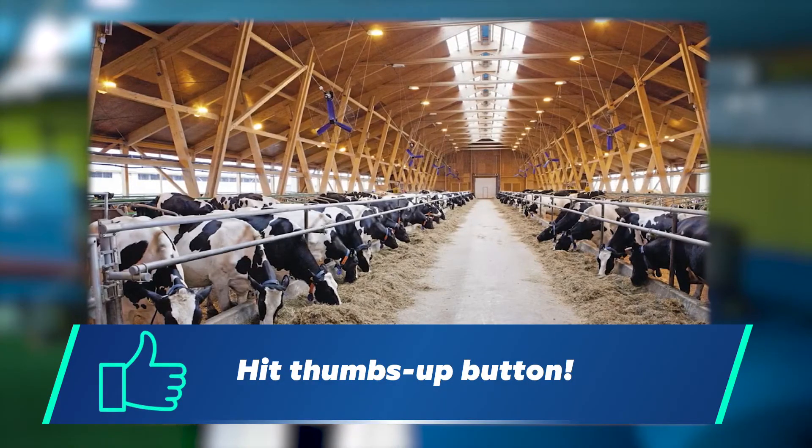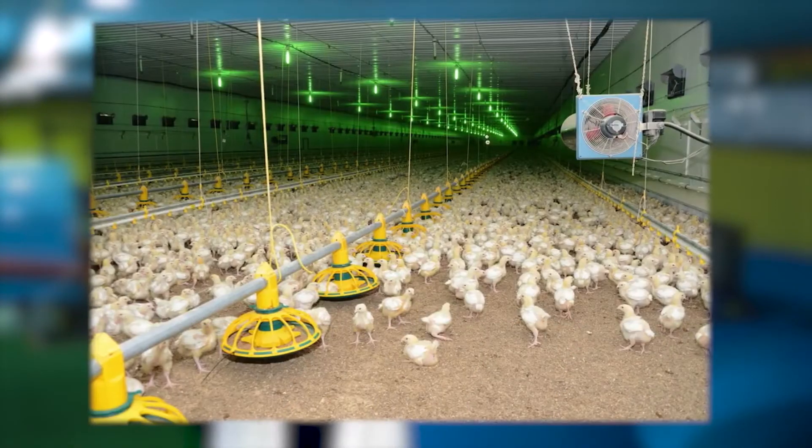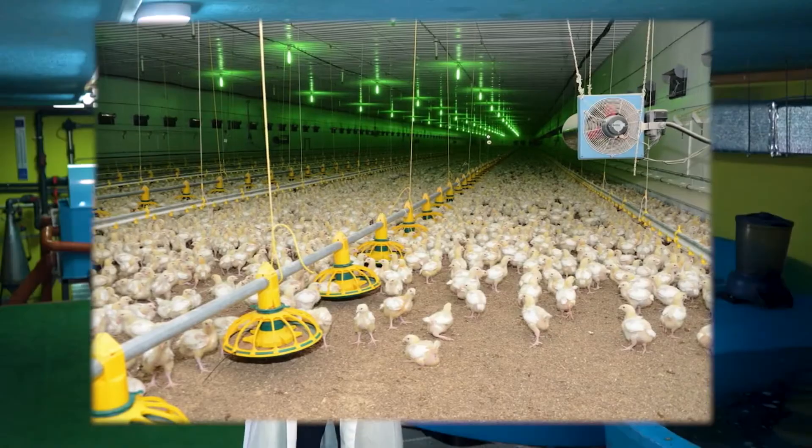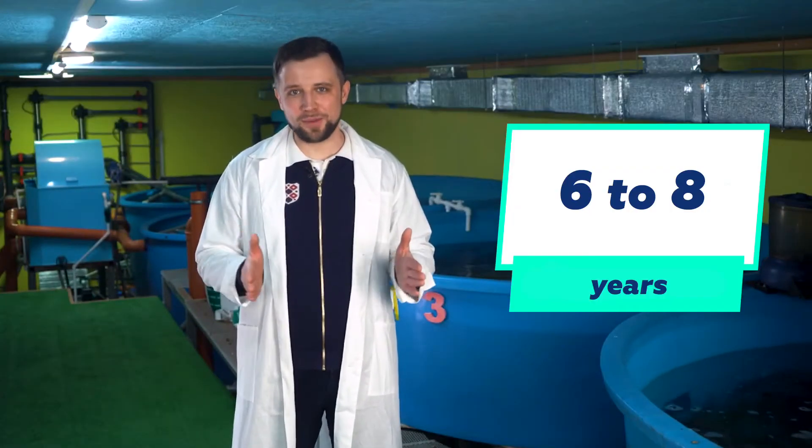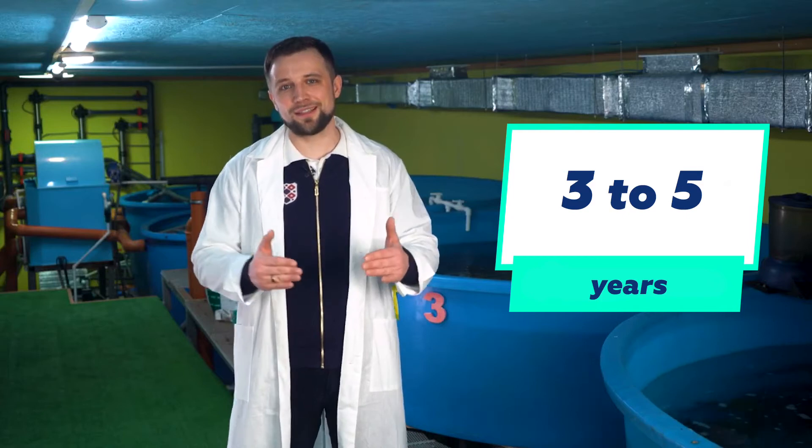Don't forget to press thumbs up button, because this video is about how to make this business profitable. Standard animal husbandry, cattle breeding, dairy farming, poultry farming usually pay back not earlier than in 6 to 8 years. This has been established by the market. A properly organized fish farm pays back in 3 to 5 years, which is generally much faster than all the main branches of agriculture.